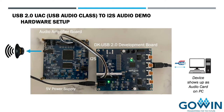The USB audio class demo utilizes two boards. The first board is a DKUSB 2.0 development board, and this is connected to the USB host — in this case a PC — using a USB cable and a USB port on this board. This board also contains the FPJ, which will contain the USB 2.0 device controller and UAC link layer.